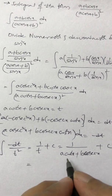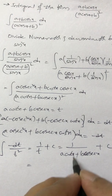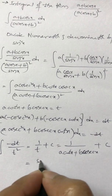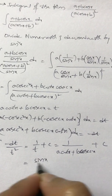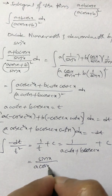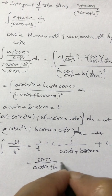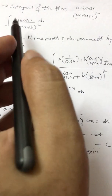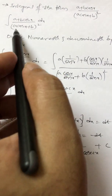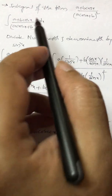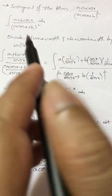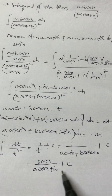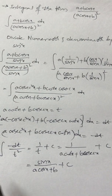Writing cot x as cos x/sin x and cosec x as 1/sin x, then t = (a cos x + b)/sin x. So 1/t = sin x / (a cos x + b). Therefore, directly, the answer to the integral of (a + b cos x) / (a cos x + b)² dx is sin x / (a cos x + b) + c.